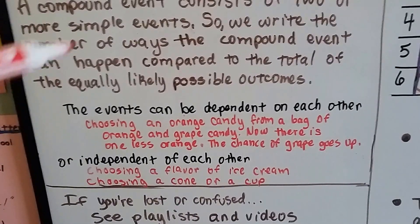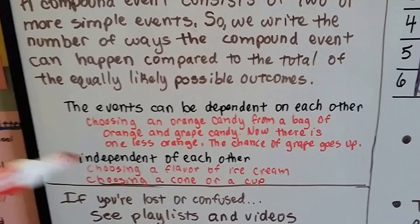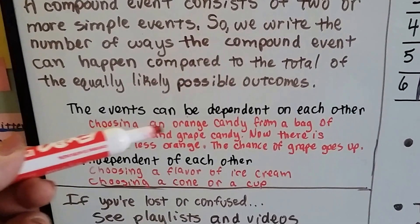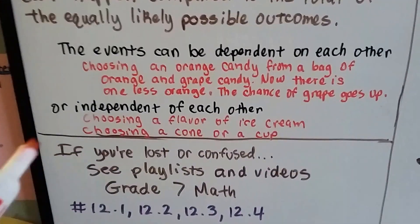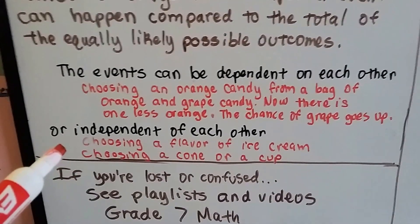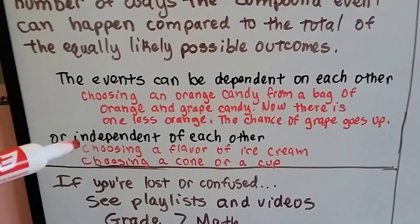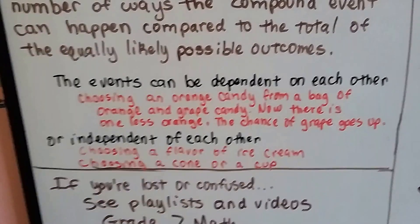Now, if we put the orange candy back in and then picked again and didn't eat it, then it would be independent. But if we eat that candy and now there's one less, then it would be dependent on what happened before. If it's independent of each other, that's like choosing a flavor of ice cream like chocolate, vanilla, and strawberry, and choosing a cone or a cup. Choosing the flavor has nothing to do with it being in a cone or a cup. Those are completely independent of each other.